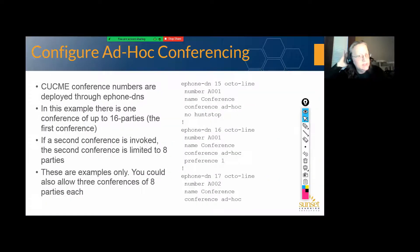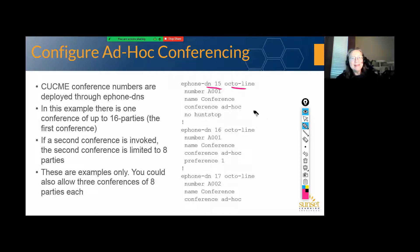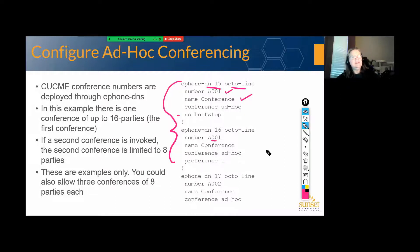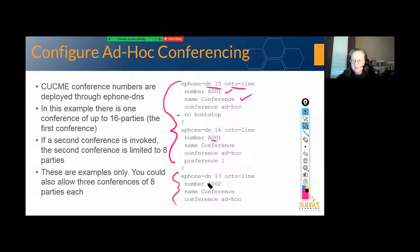The next thing we need to do is configure ad hoc conferencing. What I have set up here is an ePhone DN. I'm stating OctoLine, which if you're going to be doing ad hoc conferencing is probably a good idea — you don't want to limit an ad hoc conference to two parties. Give it a number, and because we're doing ad hoc conferencing, I'm going to make this a non-dialable number so it doesn't interfere with my dial plan and people can't dial it accidentally. I have a pair of ePhone DNs with the same number, creating the ability to have a 16-party ad hoc conference. No-hunt stop on the first one, and preference one on the second. I've also created a second conference number for a second conference call.